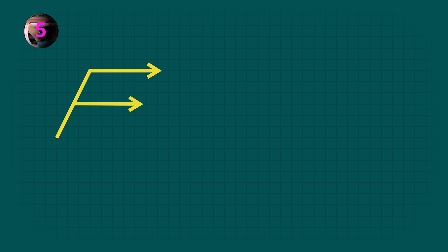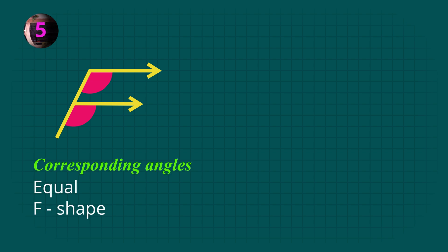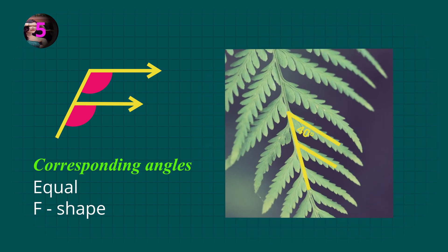First, let's see the F shape. Do you see that these angles inside the F shape are the same? These are called corresponding angles. For example, in this fern, this angle is 40 degrees and its corresponding angle is also 40 degrees.